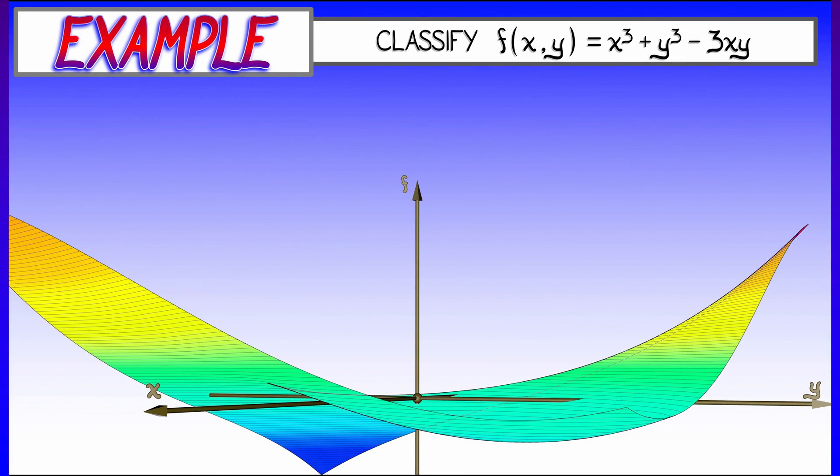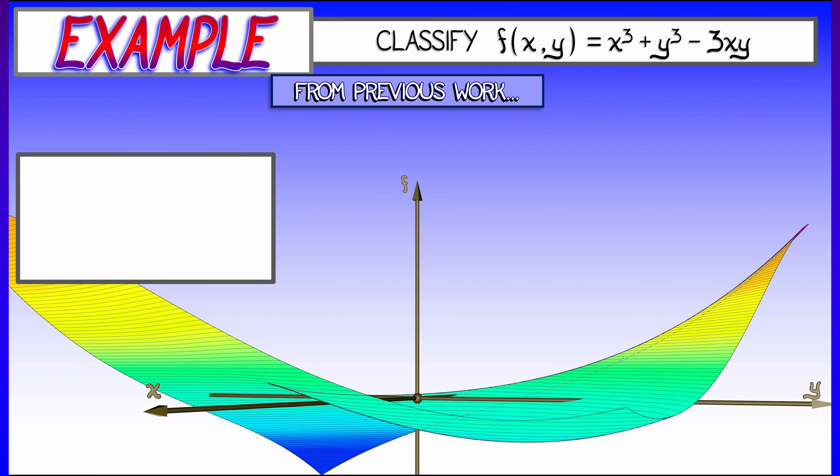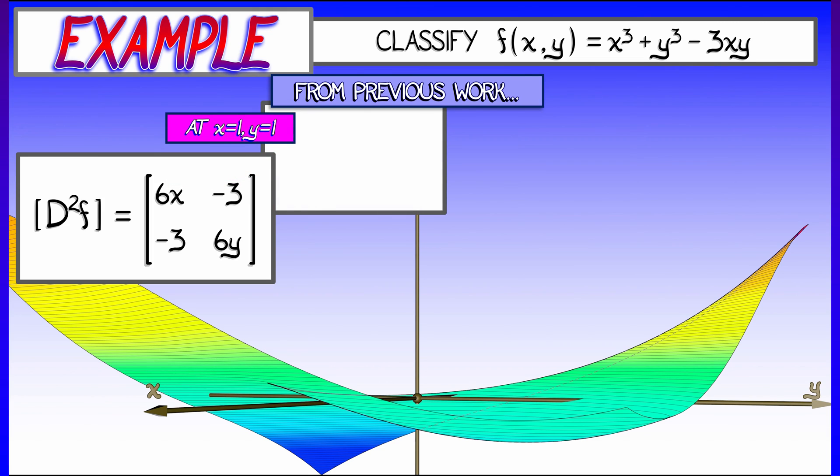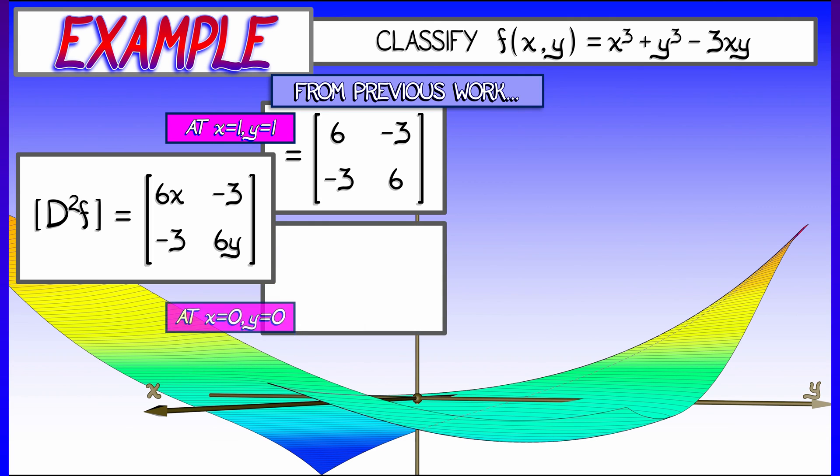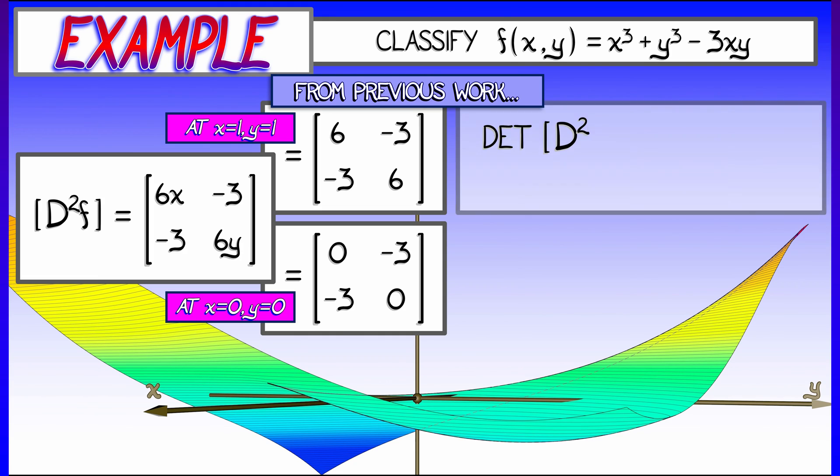If we go back to our standard example that we looked at, x cubed plus y cubed minus 3xy, then we can verify that this works. The second derivative in this case is the matrix 6x, negative 3, negative 3, 6y. At (1,1), that local minimum, we evaluate that to 6, negative 3, negative 3, 6. At (0,0), it evaluates to 0, negative 3, negative 3, 0.